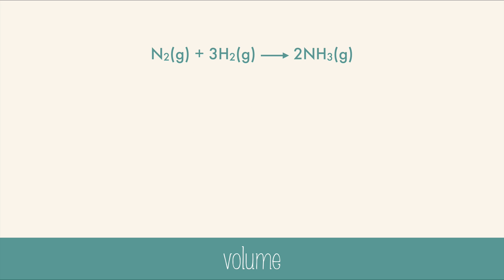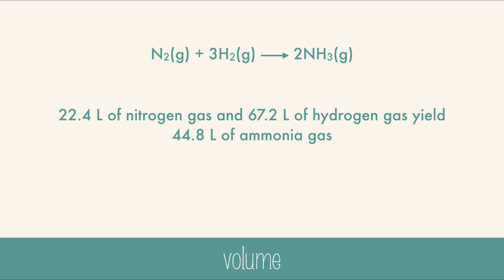Let's try volume. A mole of any gas at STP will have 22.4 liters per mole, so we can read this in terms of volume at STP: 22.4 liters of nitrogen gas and 67.2 liters of hydrogen gas yield 44.8 liters of ammonia gas. Volume is not conserved.